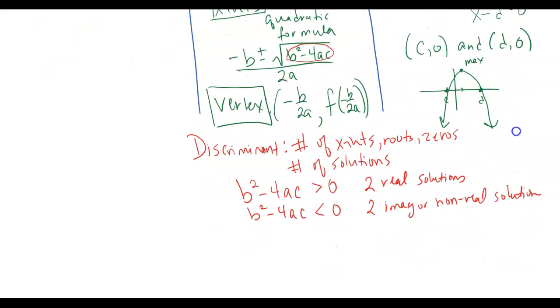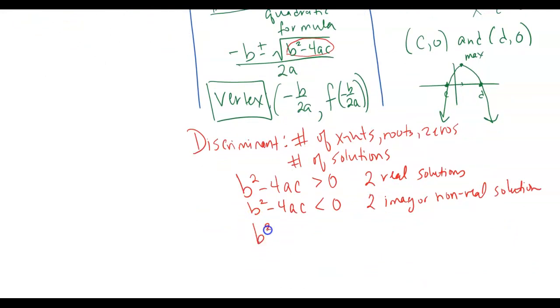And then the third option is like, well, what if it actually equals zero when I run the formula? If that happens, you're going to end up basically canceling this out. And what that means is that the vertex is on the x-axis. It means that you get only one real solution. That's kind of how that works. So that's a nice little thing to know how to do to save yourself some time.